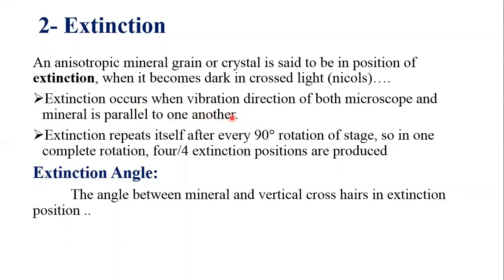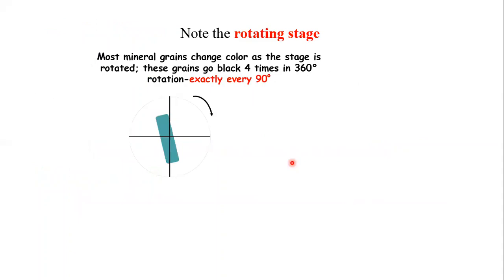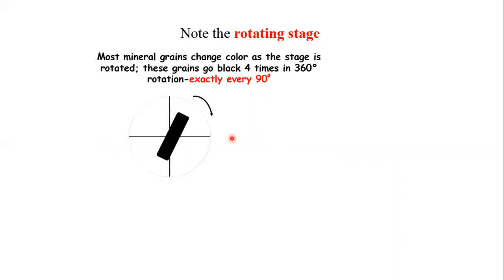Extinction repeats itself after every 90-degree rotation of the stage. So in one complete rotation, four extinction positions are observed. As you can observe in this diagram, when we rotate the stage the mineral grain becomes dark — it is now in a position of extinction. This position of extinction is repeated after every 90 degrees, so extinction repeats itself four times in one complete rotation.